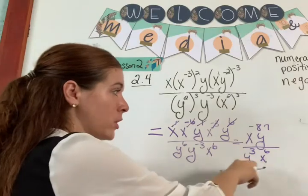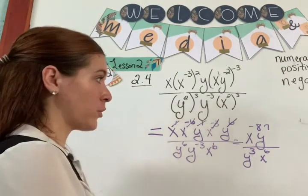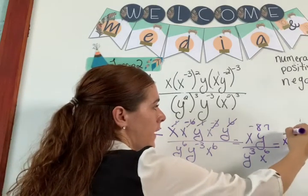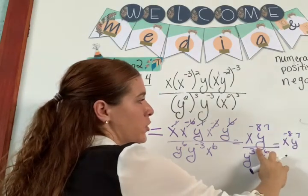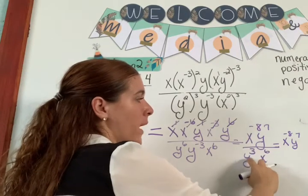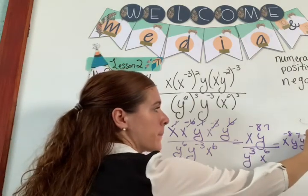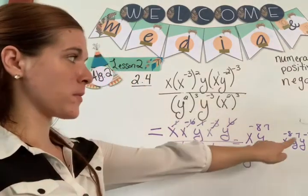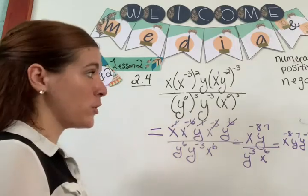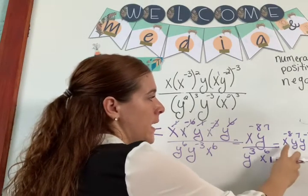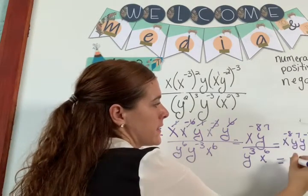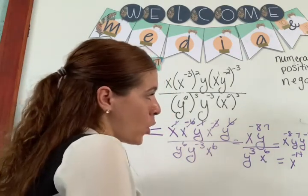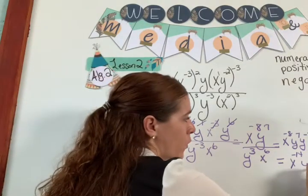Now you're going to put it all into the numerator so you can simplify afterward. You have x to the negative 8 and y to the 7 — keep those in the numerator. Then push the denominator terms up: y to the 3 becomes negative 3, and x to the 6 becomes x to the negative 6. Combine them: x to the negative 8 plus negative 6 gives x to the negative 14. y to the 7 and negative 3 gives y to the 4th.